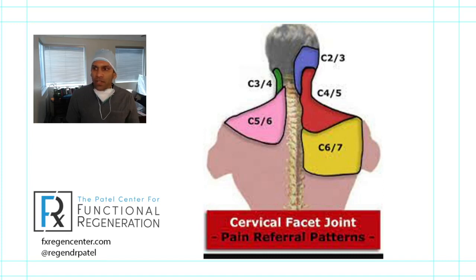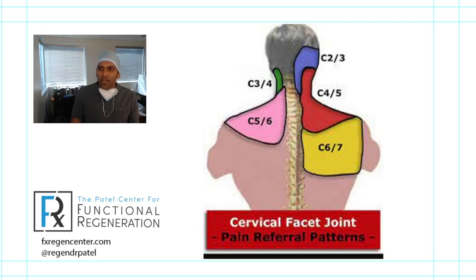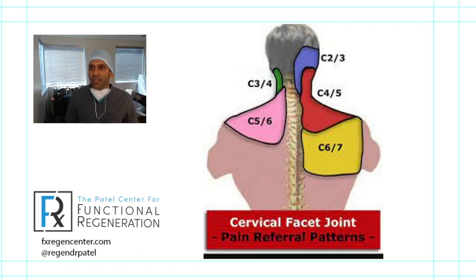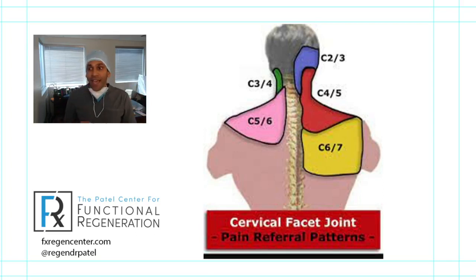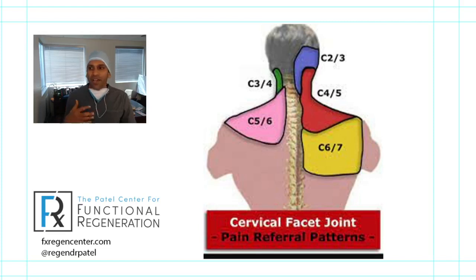Karim shared that after five treatments he's feeling super — all his heart symptoms are gone. He did PRP to C0-C2 and prolotherapy to C3-C7. That's an example of strengthening the ligaments and structures around the neck and actually improving symptoms that are far away from the neck — like heart symptoms.